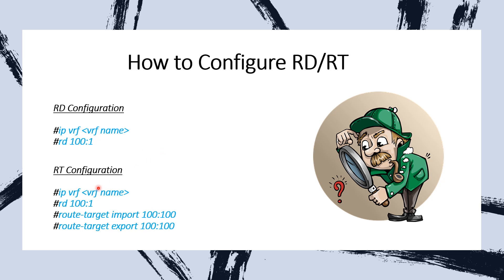Similarly, for RT configuration, you go under the VRF definition. After configuring the RD, you configure your route targets. Route targets are configured for both import and export, because as discussed, route targets define VPN membership and are used to exchange routes between different VRFs or different sites of the same VRF.